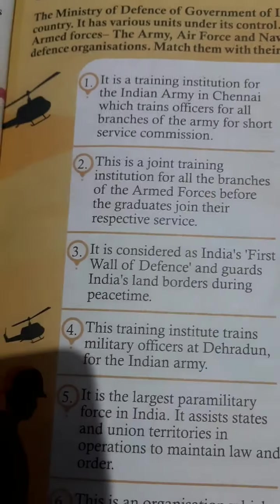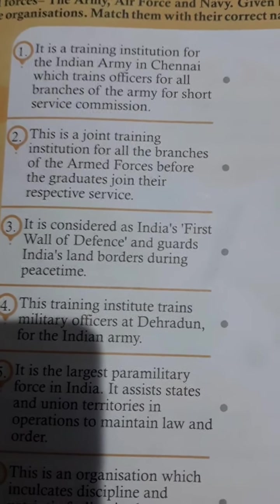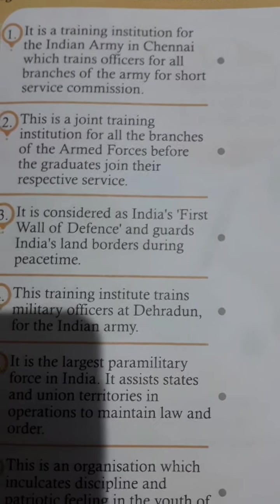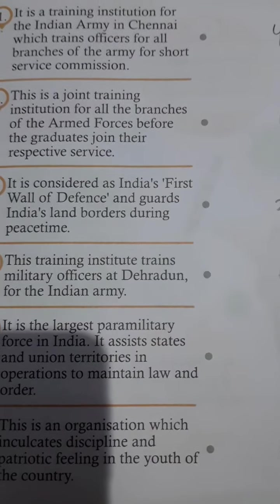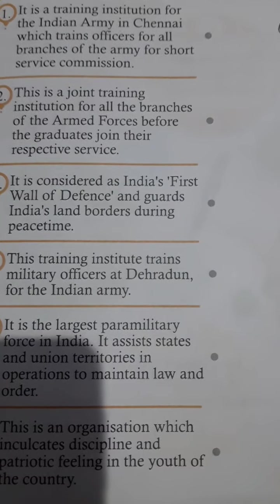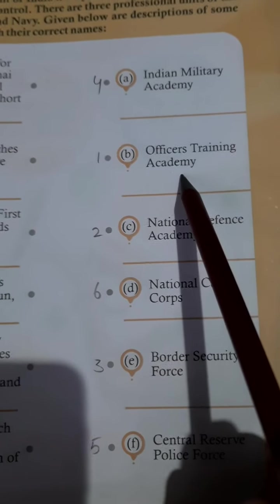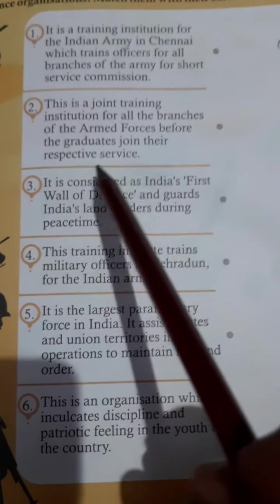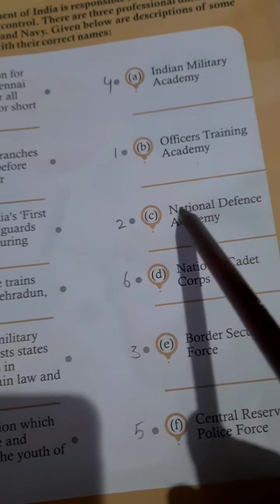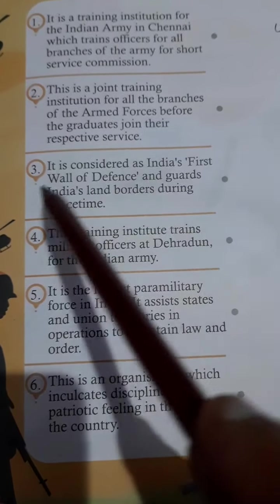Given below are descriptions of some defense organizations — match them with their correct names. First: it is a training institute for the Indian army in Chennai, which trains officers for all branches of the army for short service commission — this is the Officers Training Academy. Second: it is a joint training institution for all branches of armed forces before graduates join their respective services — this is the National Defense Academy. Third: it is considered India's first wall of defense and guards India's land border during peacetime — this is the Border Security Force.